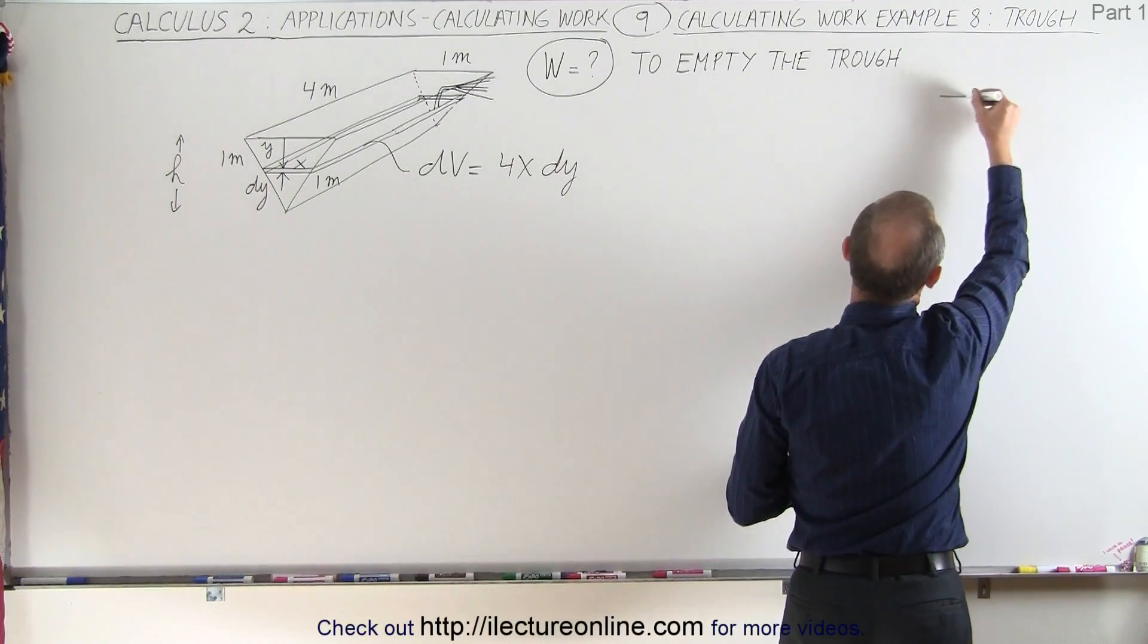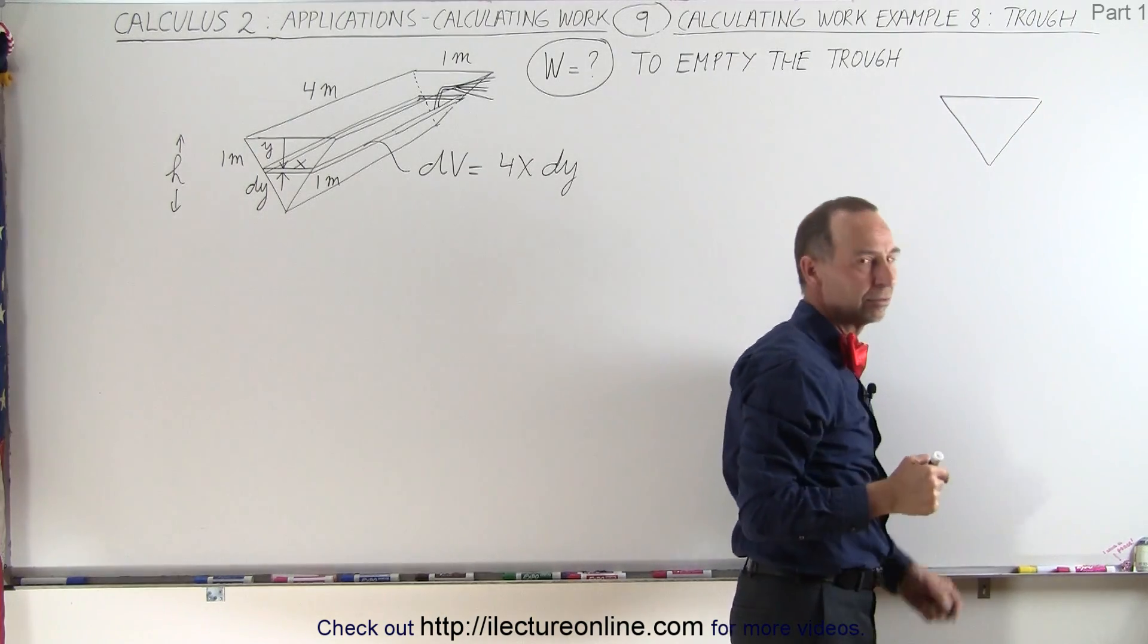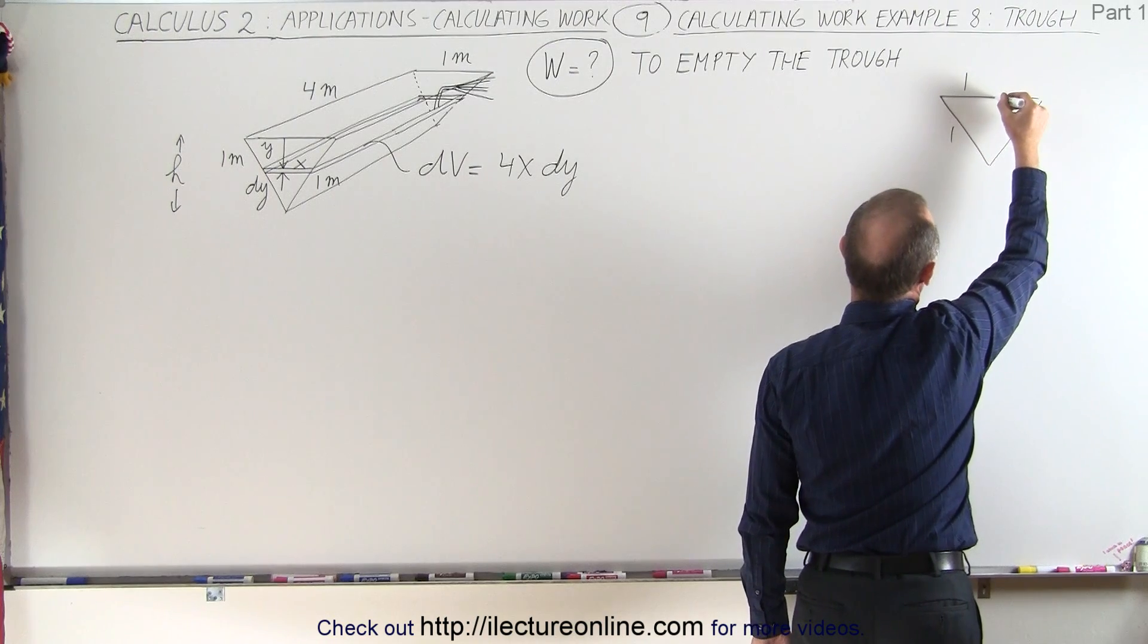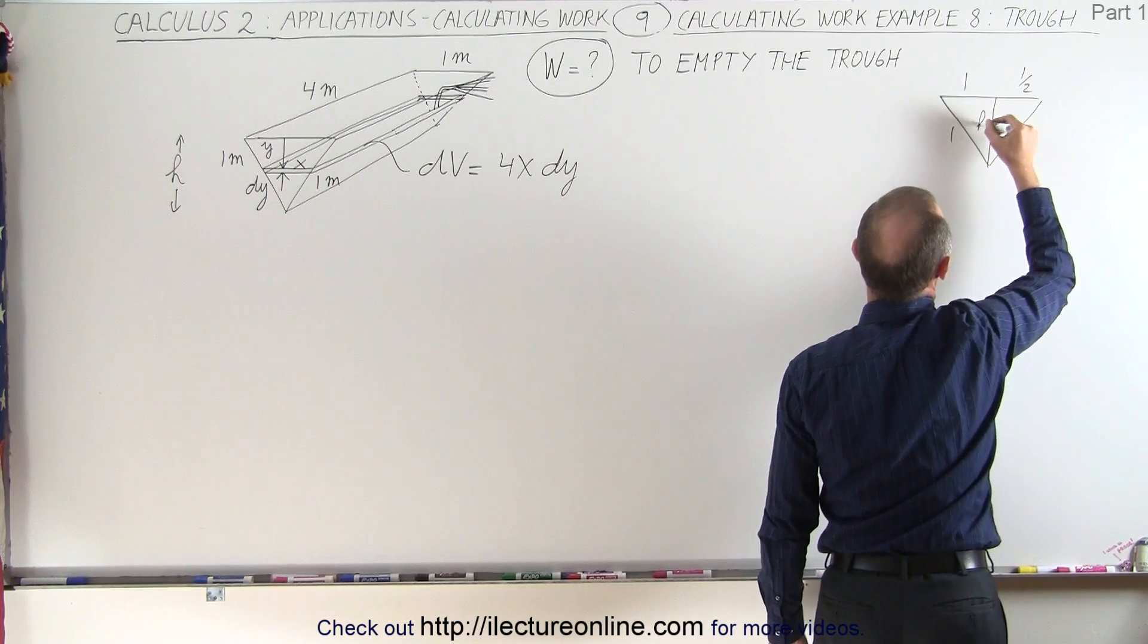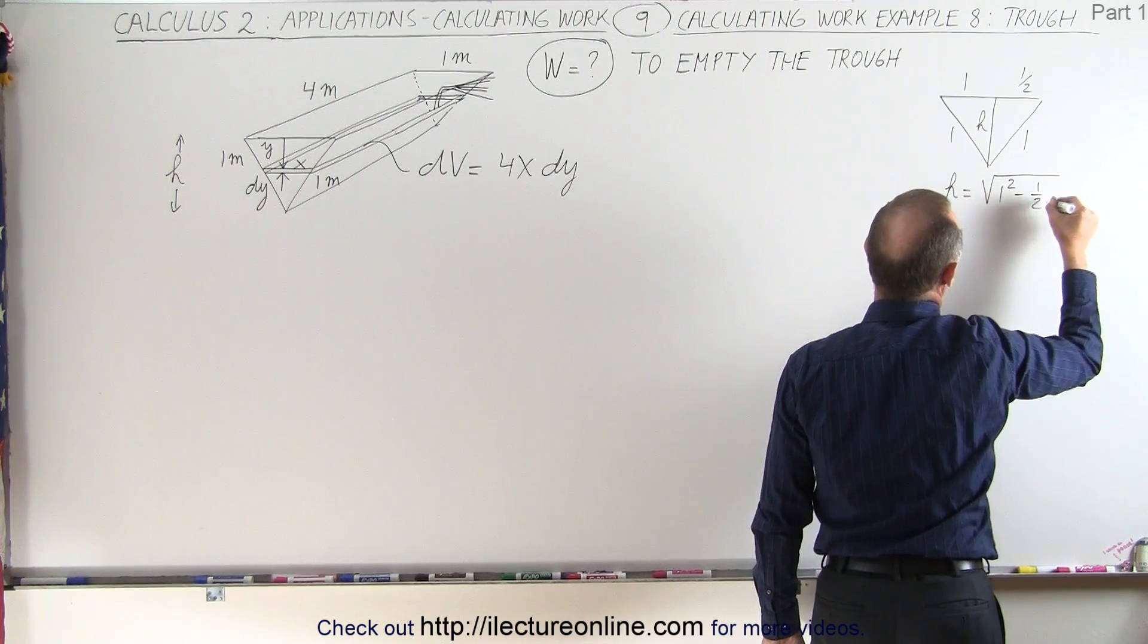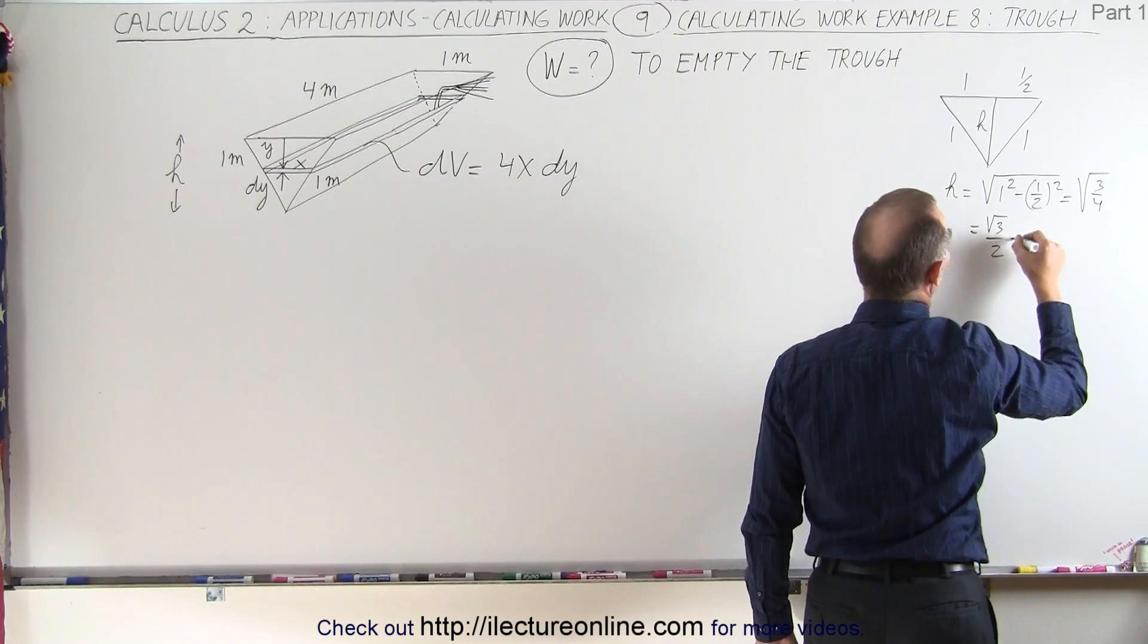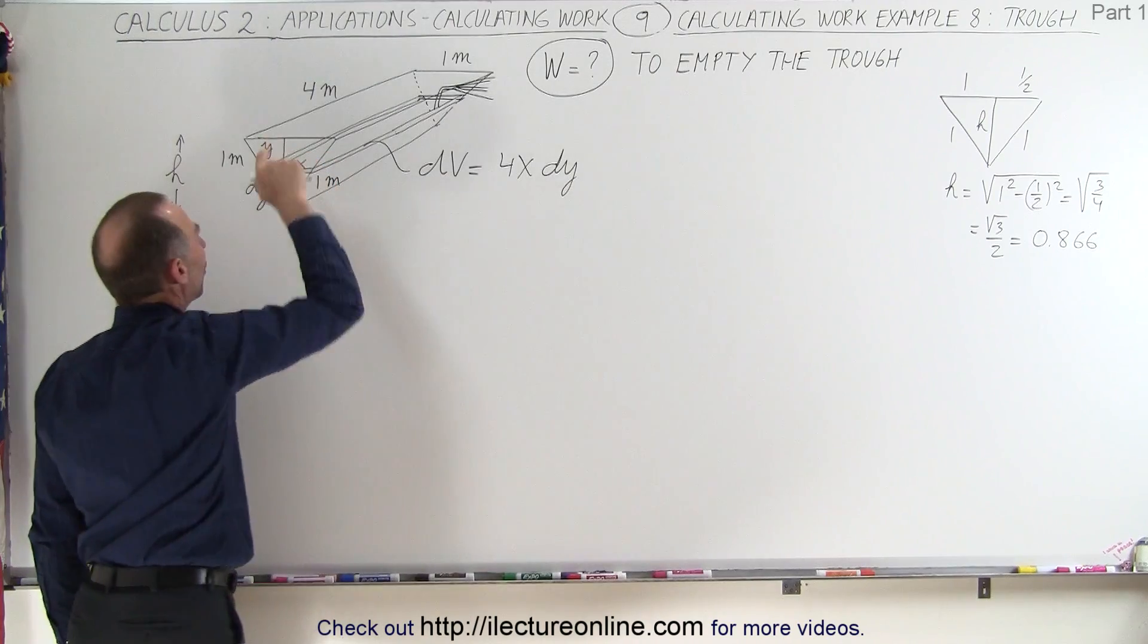So the cross-sectional area is an isosceles triangle. Matter of fact, it's an equilateral triangle with sides one, one, and one. Now if we draw a line straight across like this, we can see that this here will be one half, and then the height can be calculated by saying that h will be equal to the square root of one squared minus a half squared, which is equal to the square root of three over four, which is equal to the square root of three over two, which is about 0.866. So the height of that trough is 0.866.